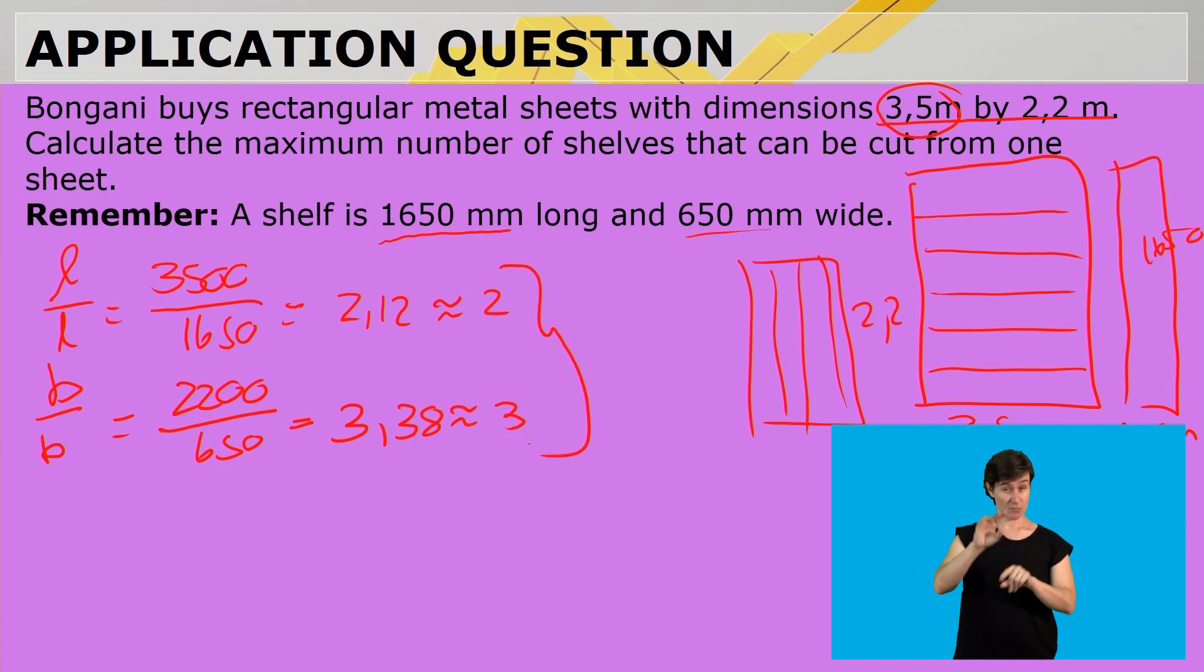So, when we use this way, it's 2 times 3, and we will be able to have 6 shelves.